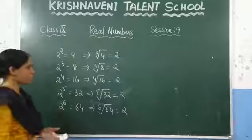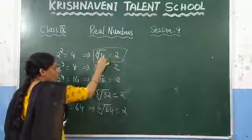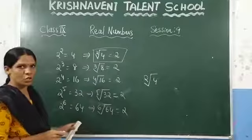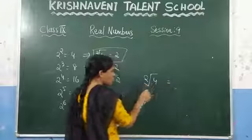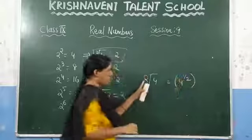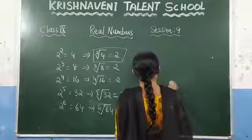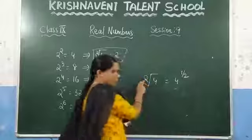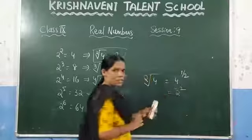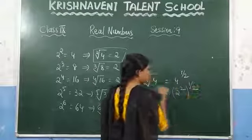Let us prove one of these. Why does square root of 4 equal 2? If you want to prove it: square root of 4 can be written as 4 to the power 1 by 2. You know that the root symbol means power 1 by 2. Now 4 can be written as 2 squared. So you have 2 squared, whole power 1 by 2.